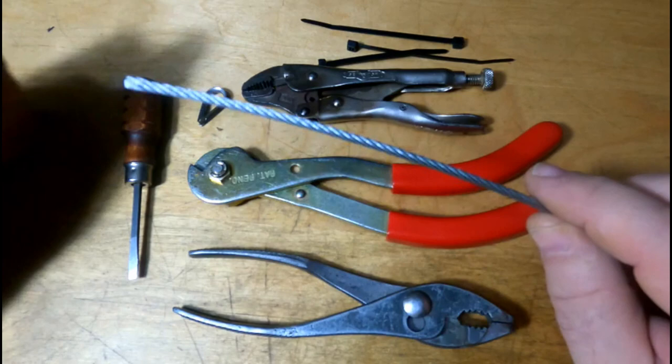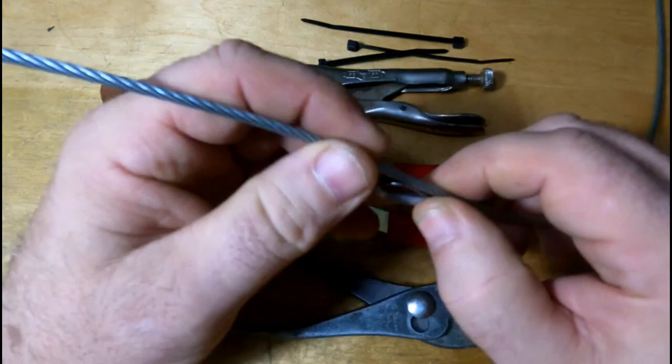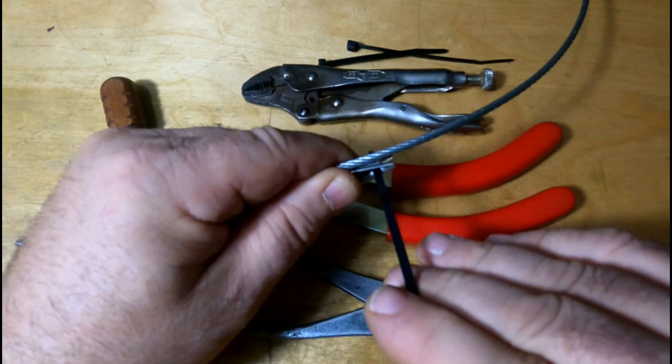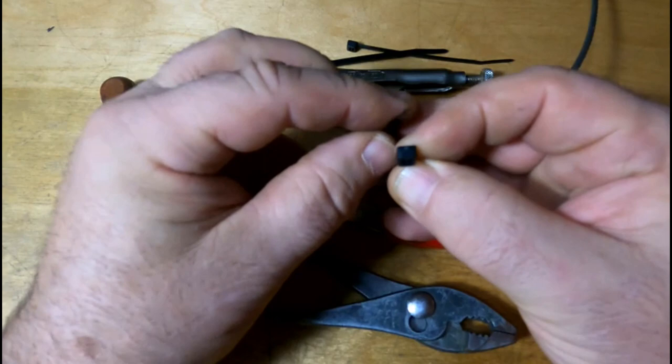We'll start with the first step, which is to prepare the cable and thimble for the splicing process. The first thing I would do is secure the thimble to the cable.